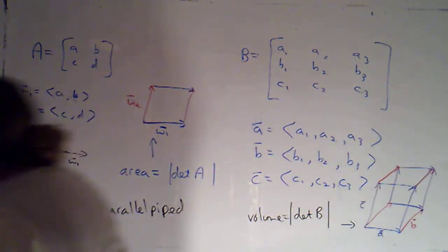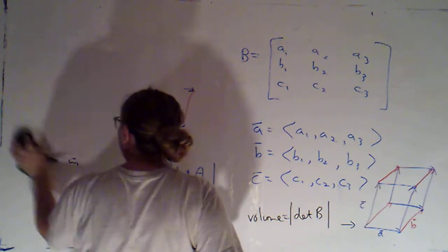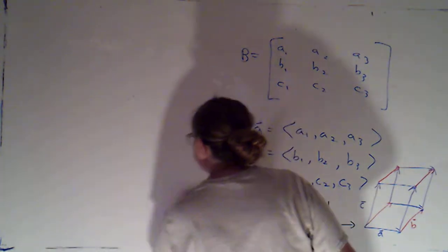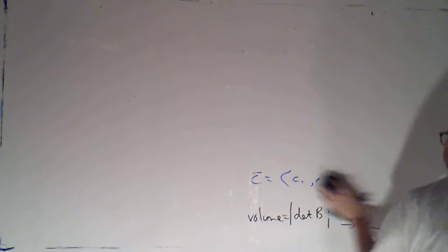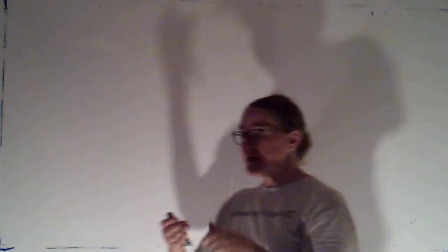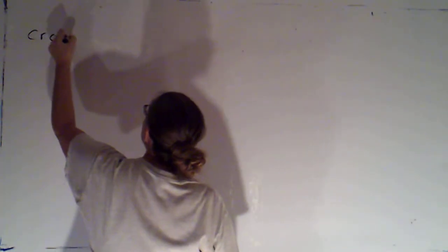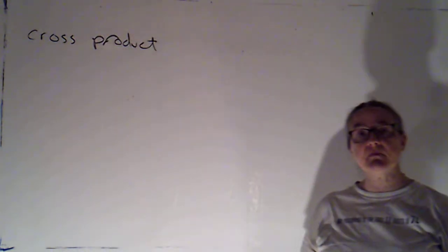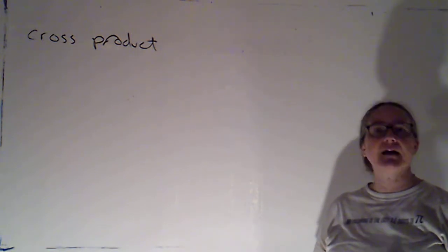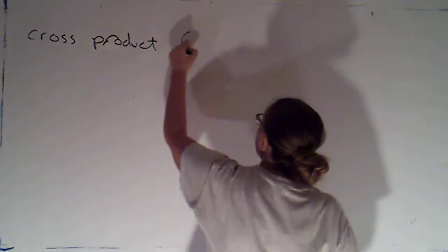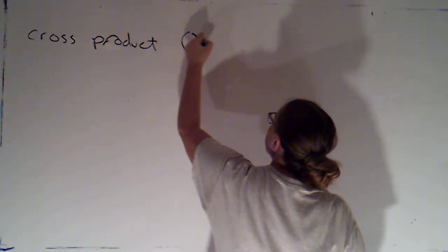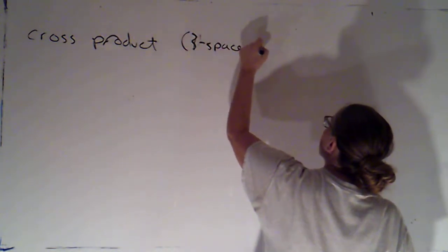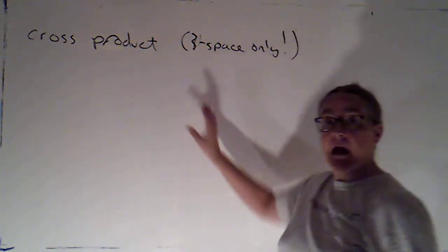Before we get there, we're going to need to define this thing called the cross product, which is the title of this section. Now, the cross product is kind of sort of a way of multiplying two vectors in three space. It's in three space only.